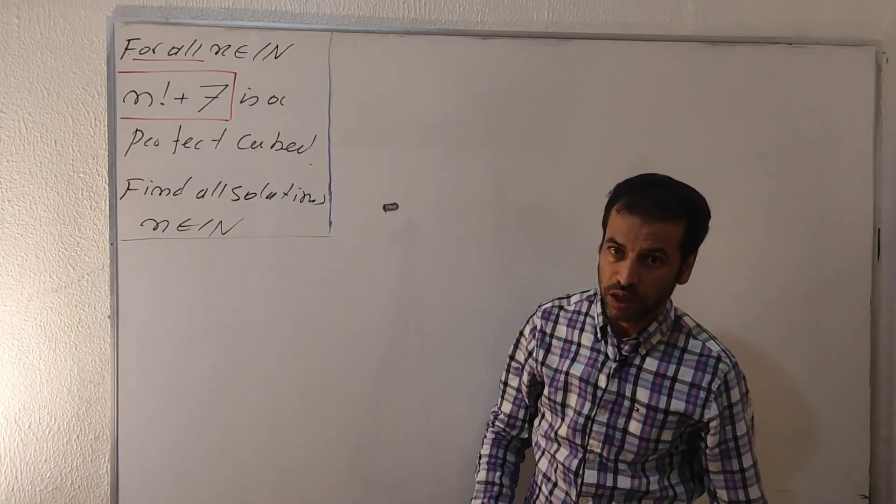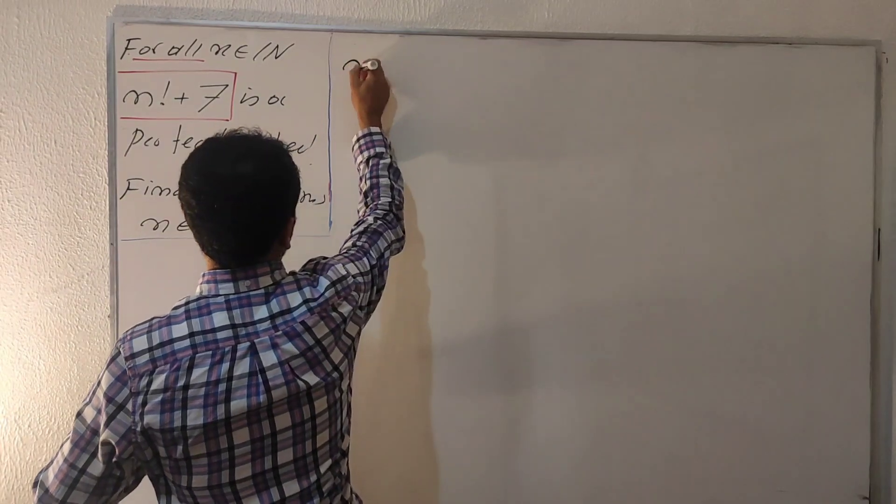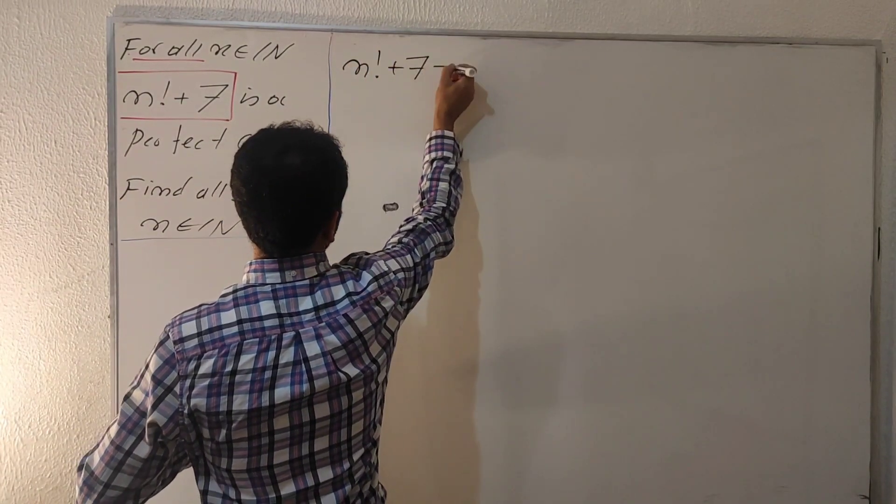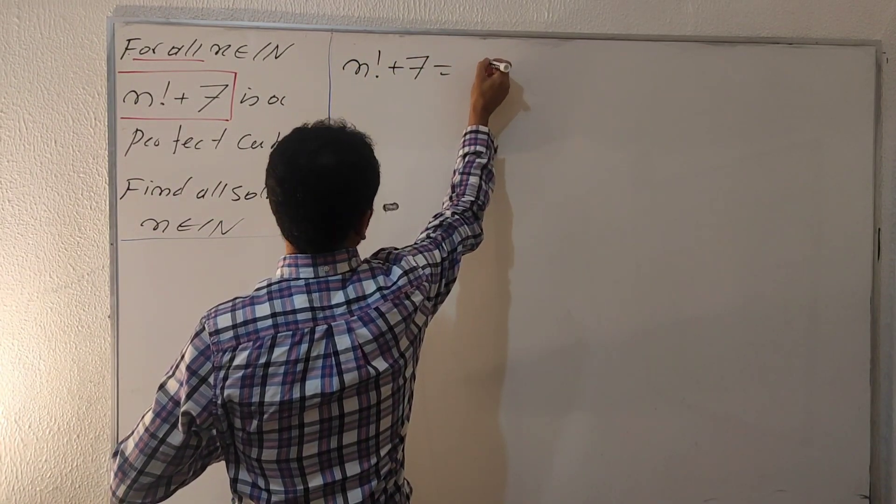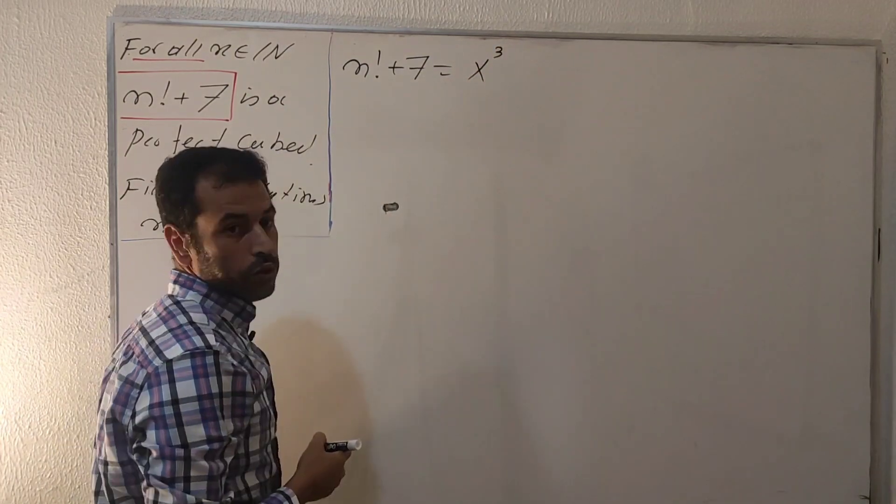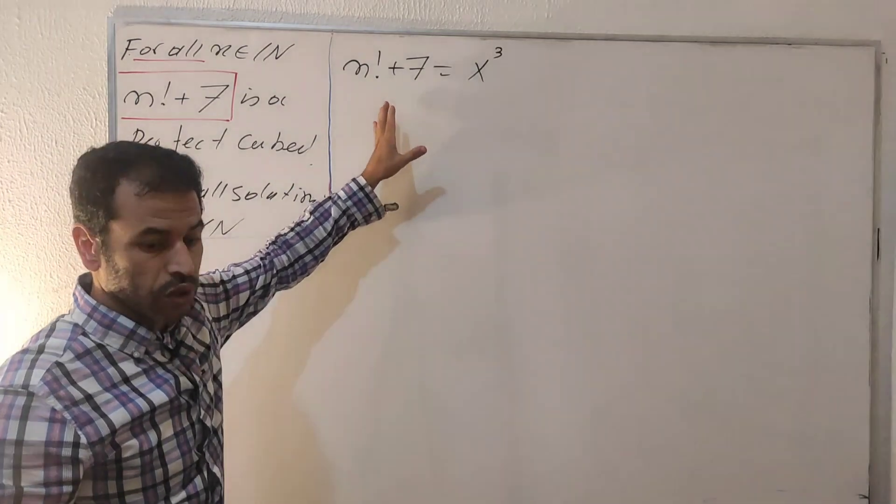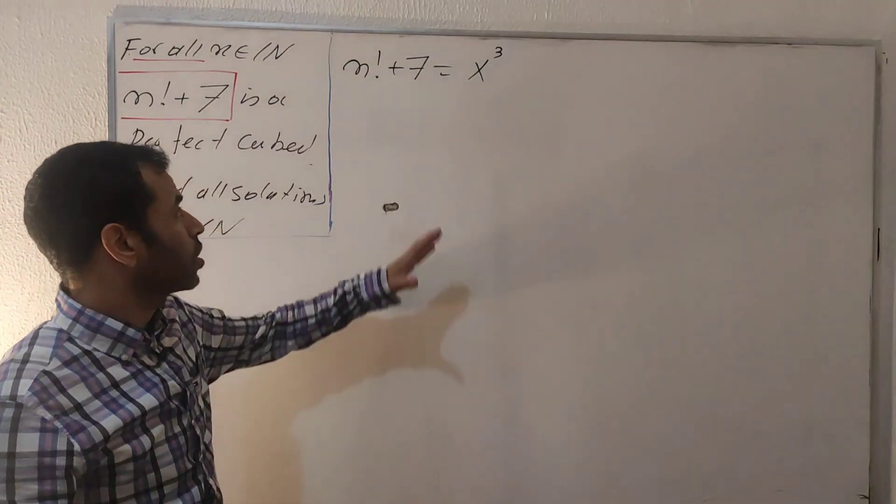Find all solutions n as a natural number. Now let's go through this one. We are saying n factorial plus number seven is a perfect cube. We're going to write this one on this form: x cubed. These kinds of problems we usually solve using the congruence notion.